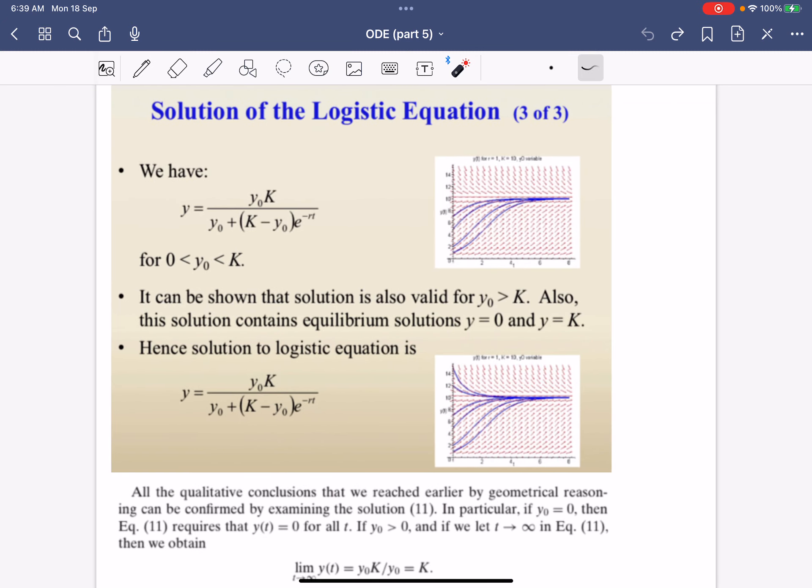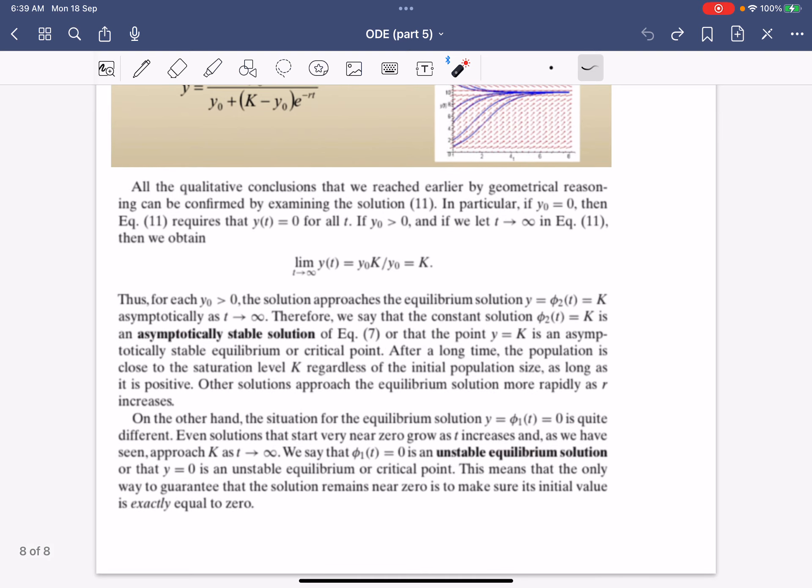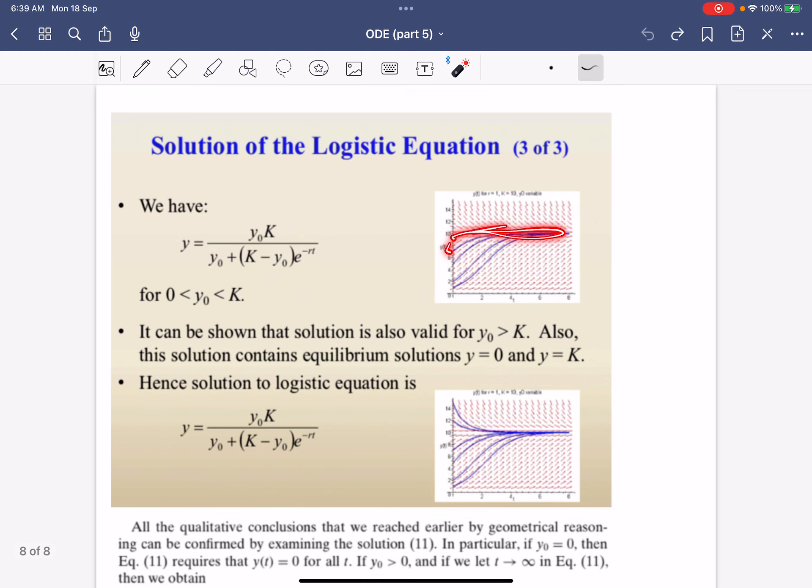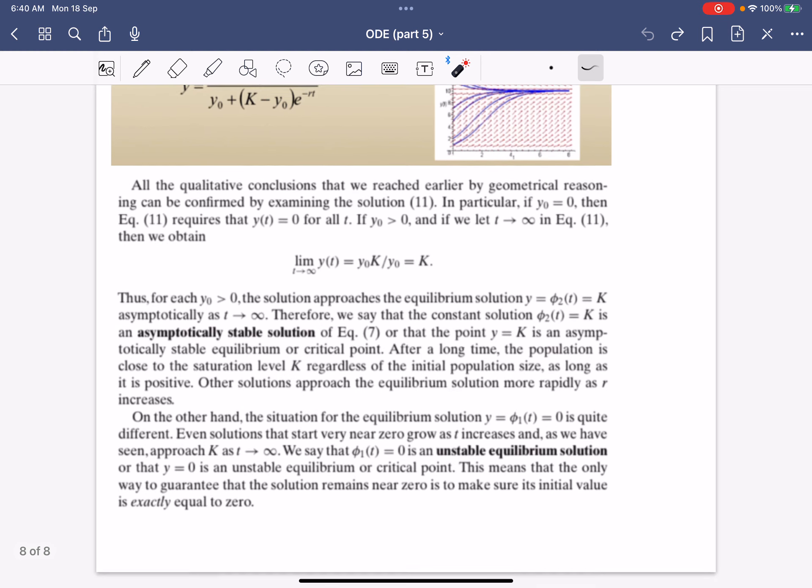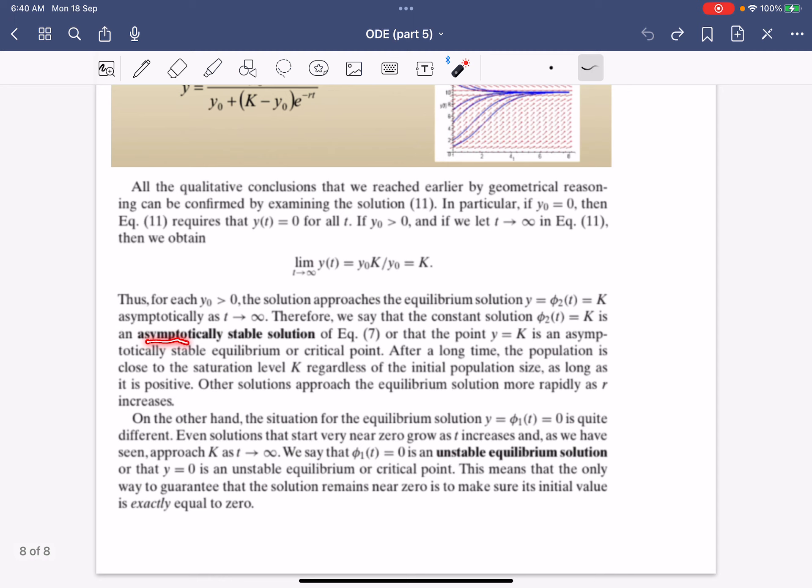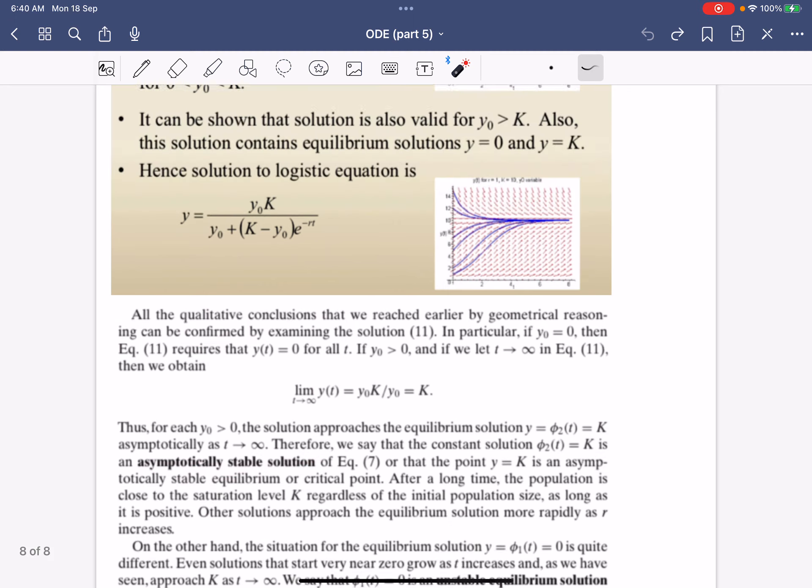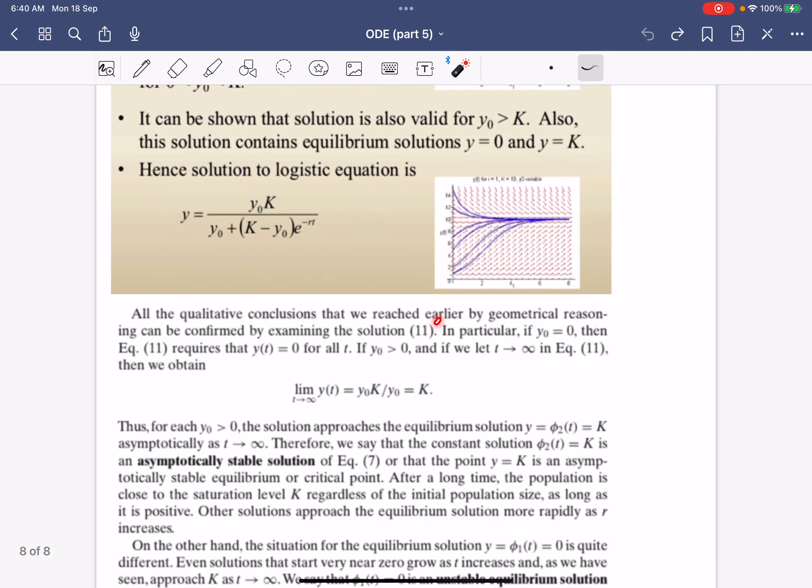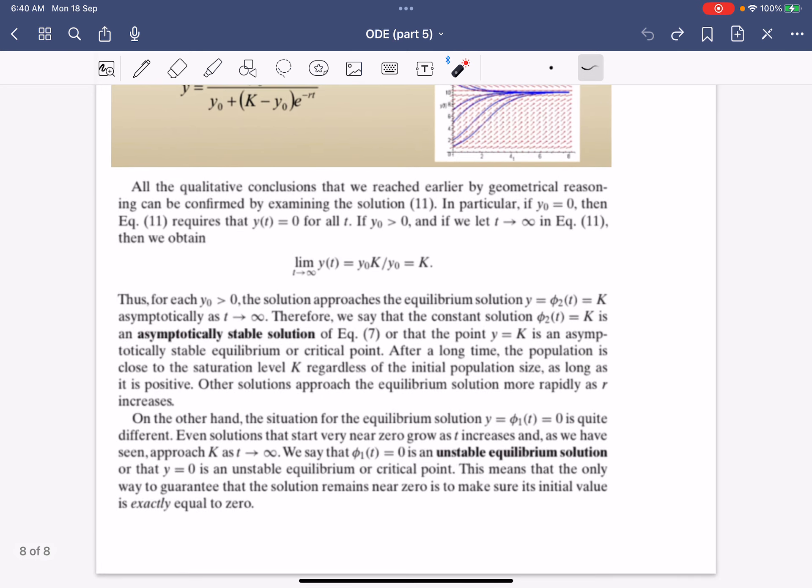With that solution, you can actually plot out the actual curve and see that it behaves like we wanted using the phase line method. Therefore, we can conclude that K in this case is always an asymptotically stable solution, and zero in this case—because population can't be negative—will be an unstable equilibrium solution.